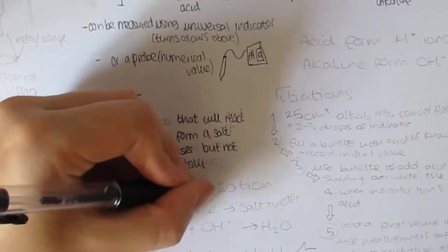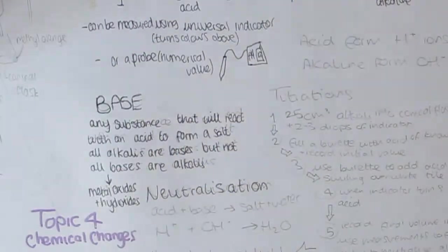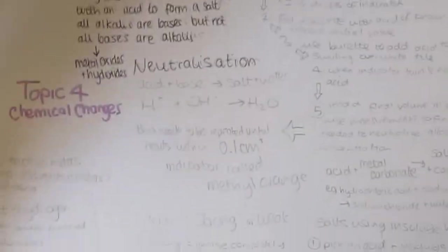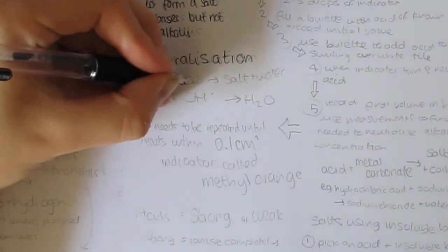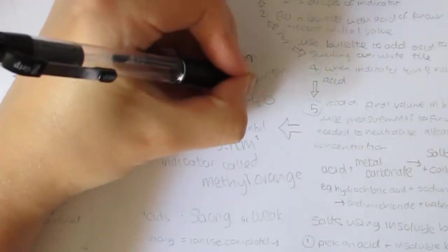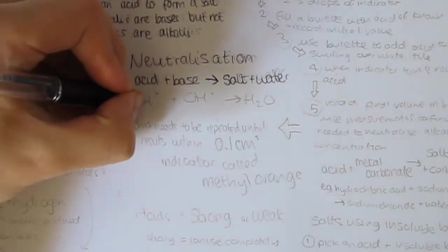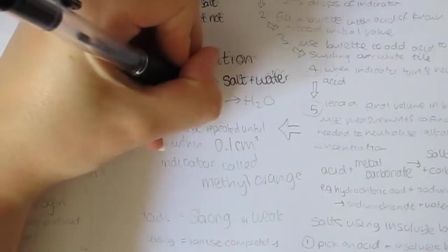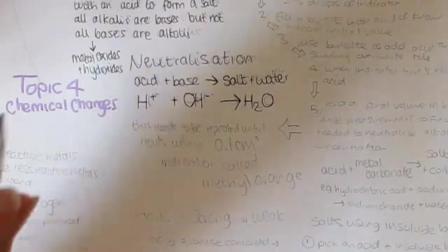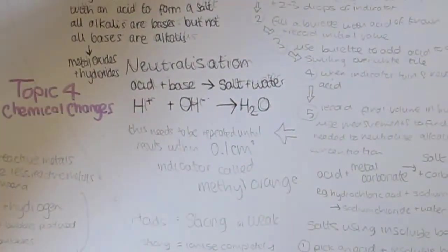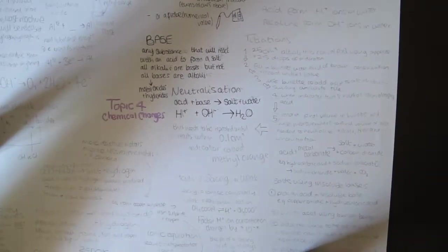The reaction between acids and bases is called neutralization and can be shown by the general equation: acid plus base makes salt plus water. This can also be shown between the H and the OH ions as H+ plus OH- makes H2O. When an acid and alkaline react in balance, the result is always neutral. An indicator can be used to show this.